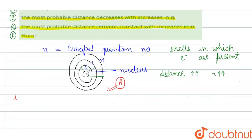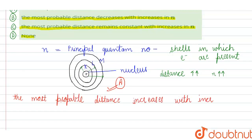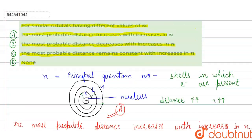So students, our option A is correct. The most probable distance increases with increase in N, because with respect to the nucleus — K, then L, then M — the distance increases with quantum number. So our first option, A, is correct.